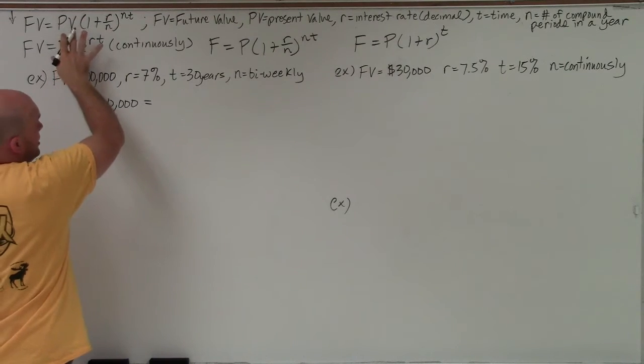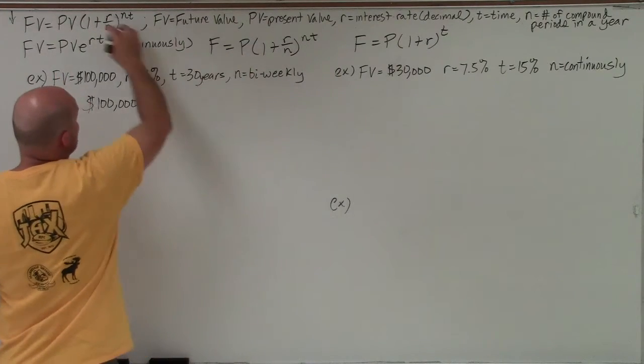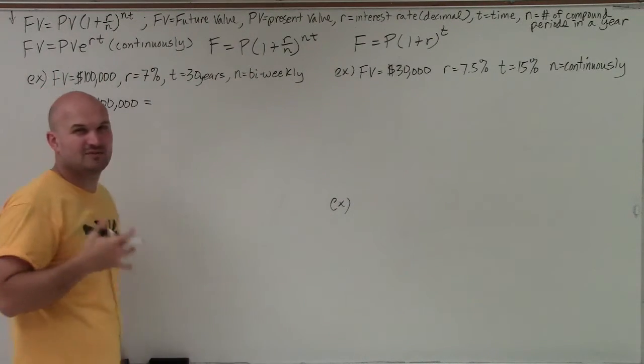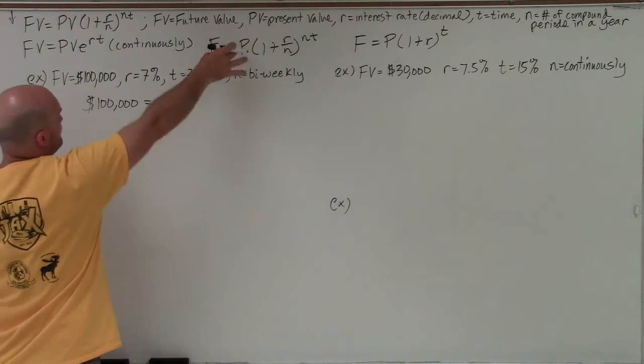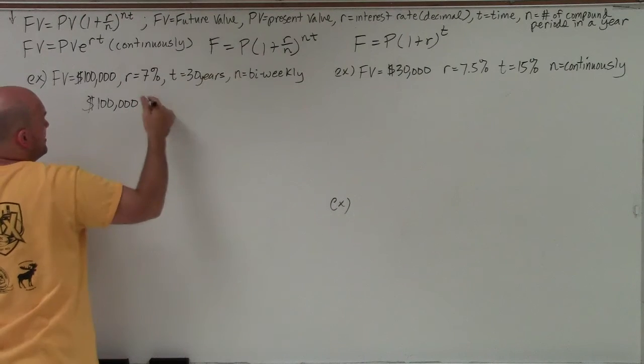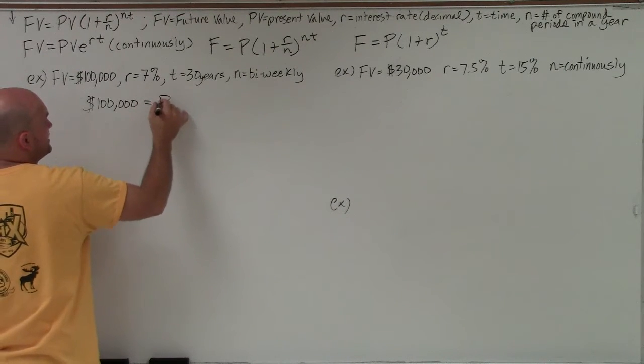Now my present value, I do not know. So I'm going to write it though as P. Instead of using PV, I'm just going to use P because I didn't want students to confuse PV as two different variables. It's just one variable which represents the initial value.